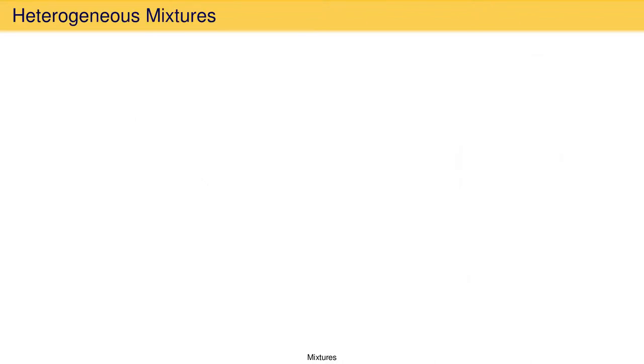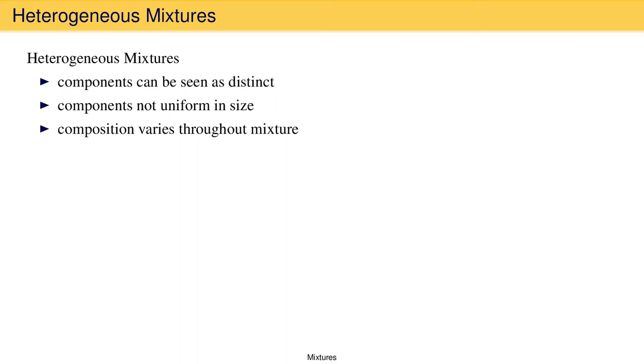Mixtures are generally divided into two categories: heterogeneous and homogeneous. Heterogeneous mixtures are ones in which the components can be seen as distinct from other components either with the human eye or with a microscope. In these mixtures, the components are not uniform in size and the composition is different in different parts of the mixture.